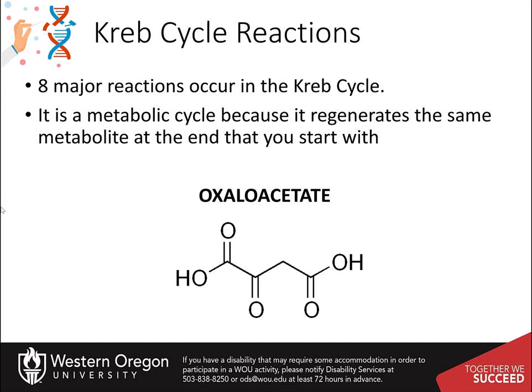The 8 reactions of the citric acid cycle use a small molecule, oxaloacetate, as the starting place for the reaction cycle. The cycle starts by the addition of an acetyl group to oxaloacetate. Then in 8 steps the acetyl group is completely broken apart, restoring the oxaloacetate molecule for another round.